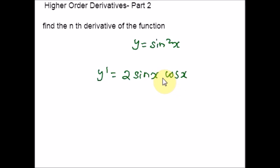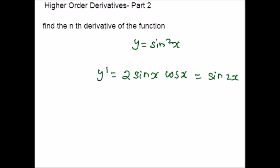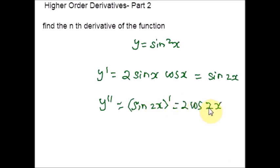Whenever you are dealing with trigonometric functions, use identities wherever possible — co-function identities, half angle, double angle, and others. When you get something close to an identity, replace it to make calculation easier. So y' = sin 2x. For the second derivative y'', we get cos 2x · 2, and cos 2x can be written as sin(2x + π/2). To find the pattern of the derivative, you need at least 4 derivatives.